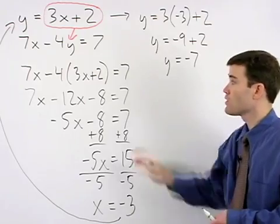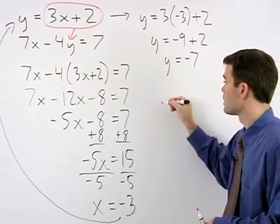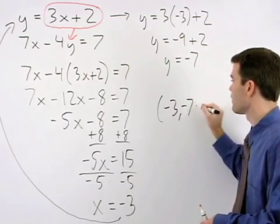So the solution to this system of equations is negative 3, negative 7.